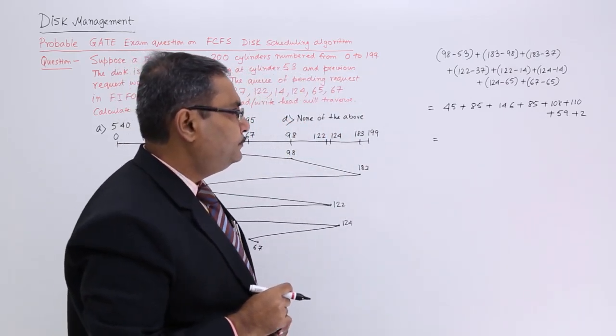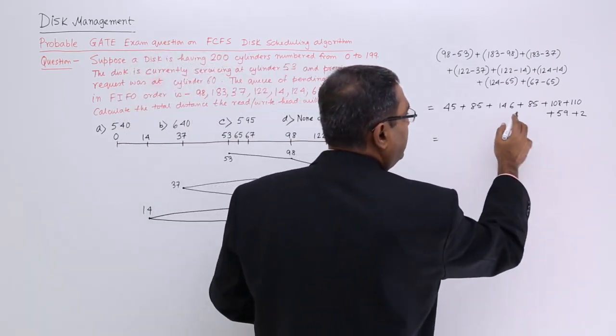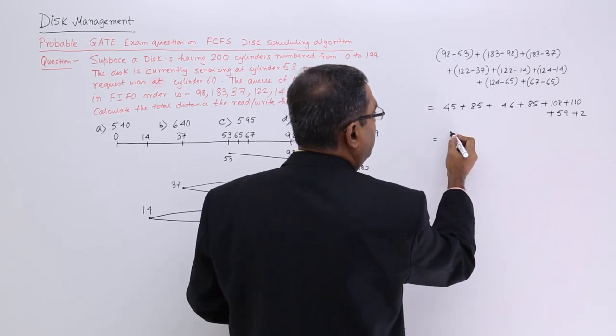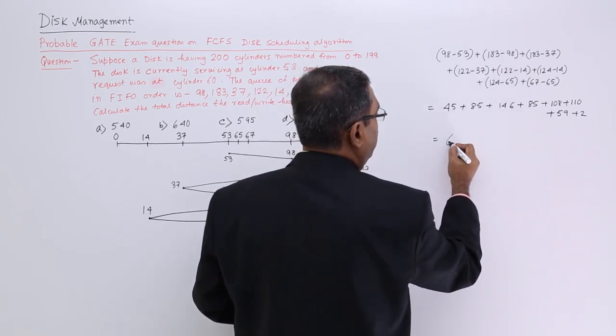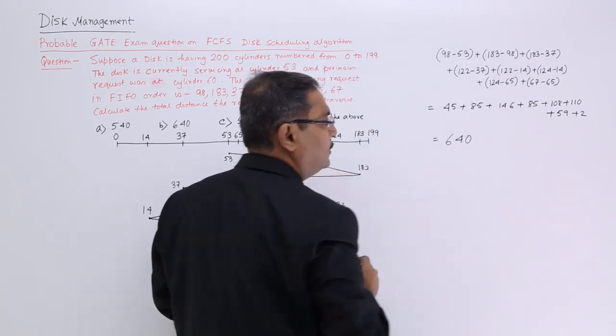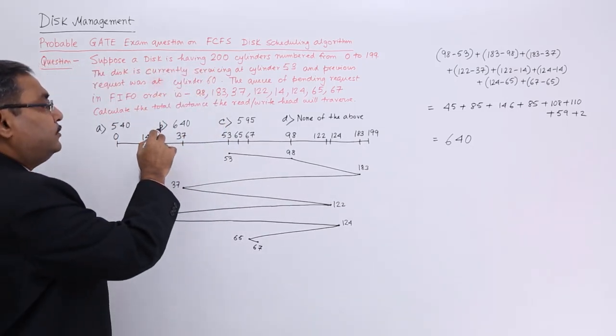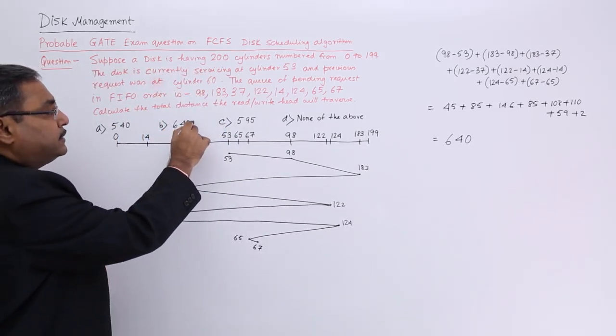So now if you go on adding them, if you go on adding, I did the sum earlier, you can later repeat it, it will be coming as 640. So my answer will be 640. This one will be my answer.